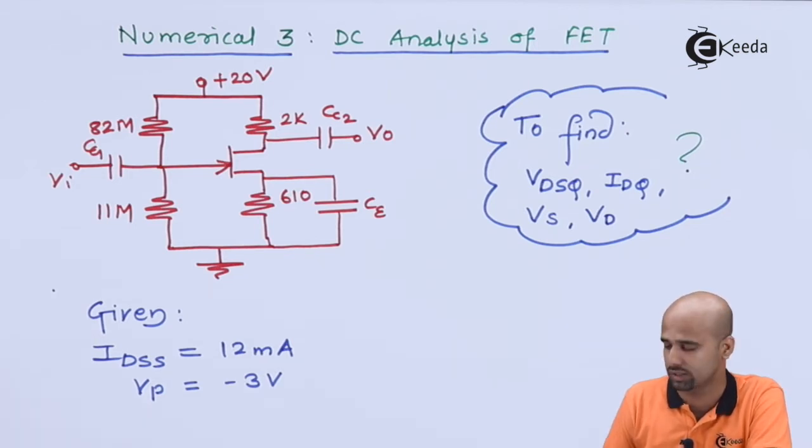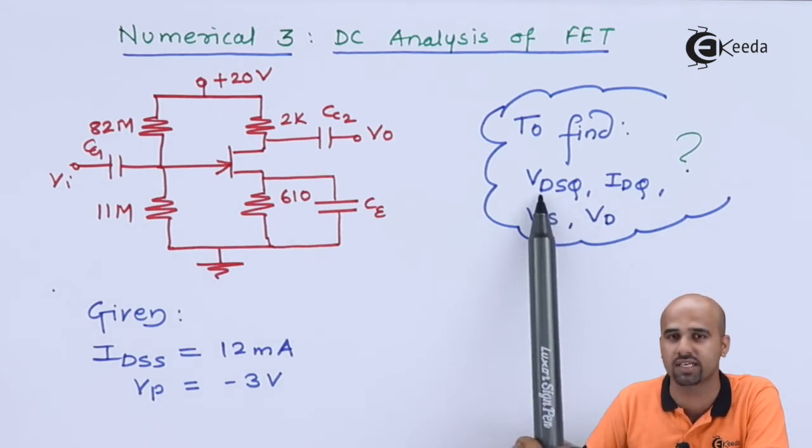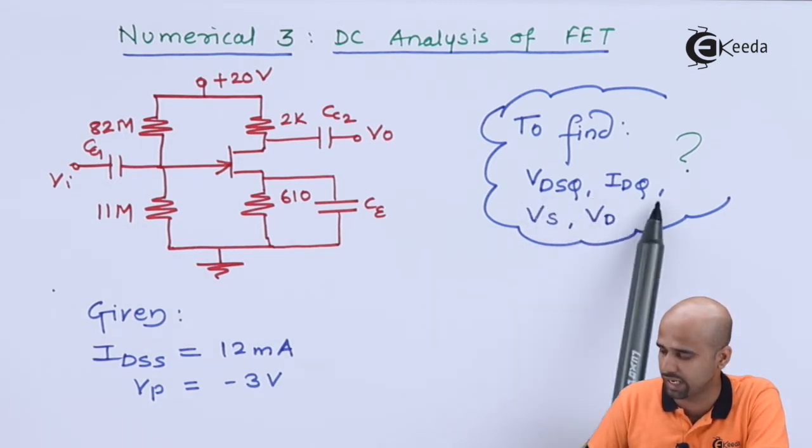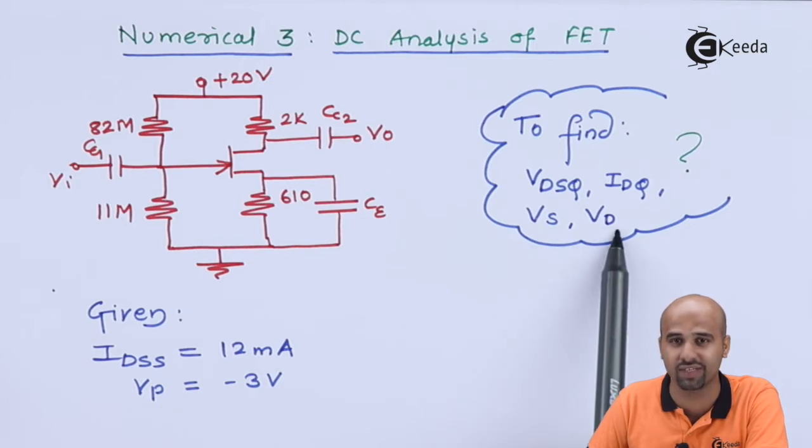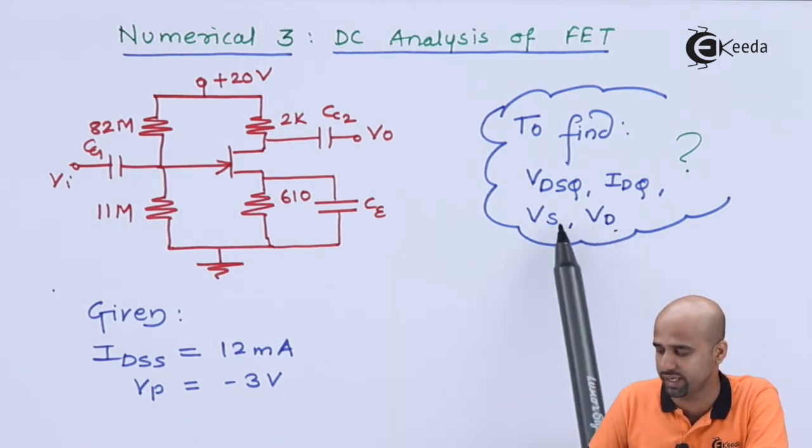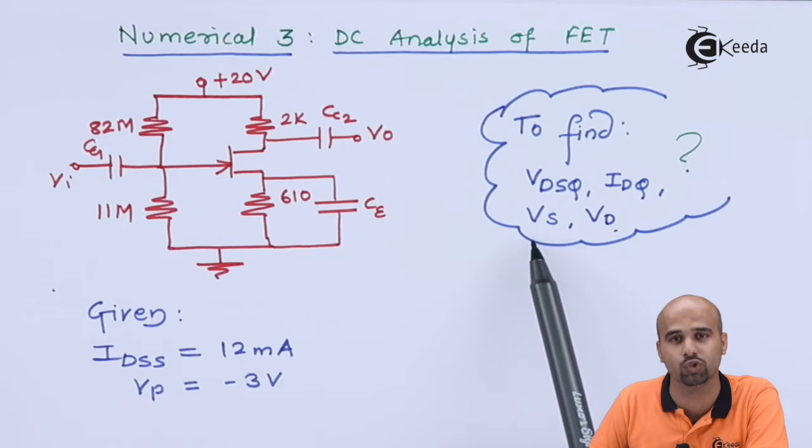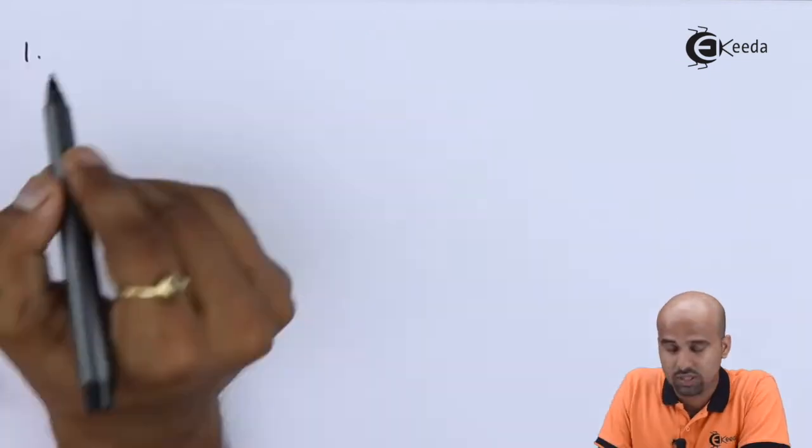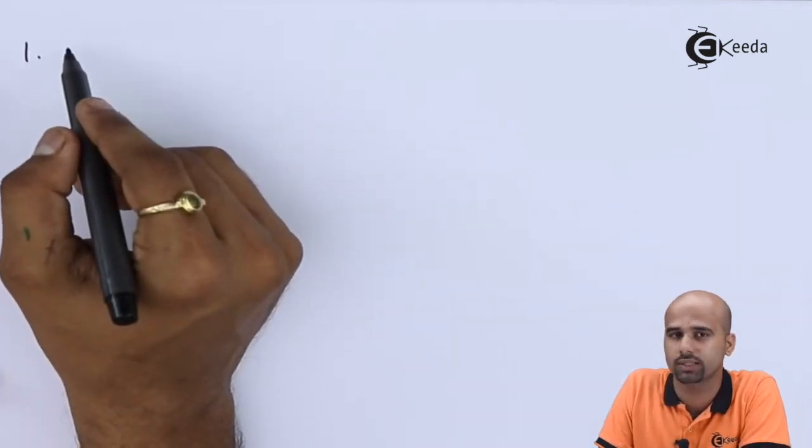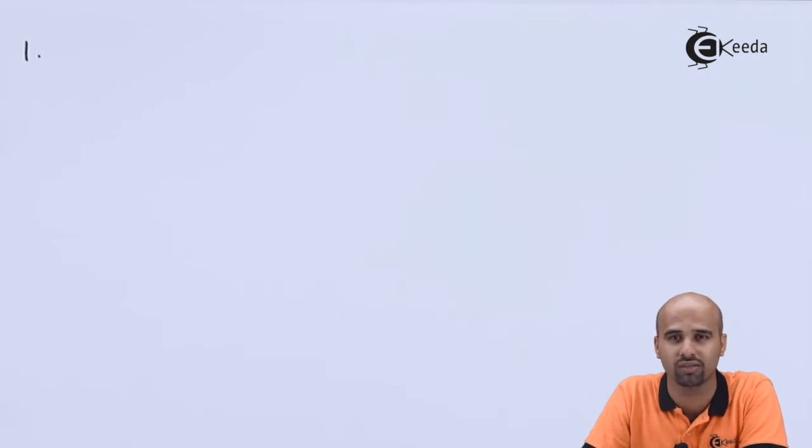And you have to find out your favorite findings that is VDSQ and IDQ. VS and VD are more additional findings that we have to see how to find. Step number one, that is here in this circuit, capacitors are involved. So we have to open all the capacitors so that input and output should not have to deal with your DC analysis circuit. We have to deal with only DC supply voltage to calculate the Q point.